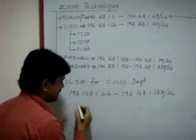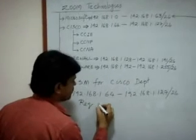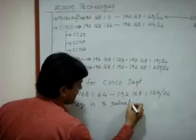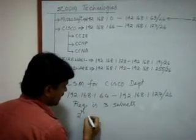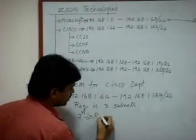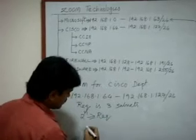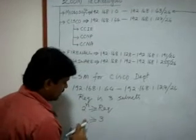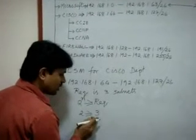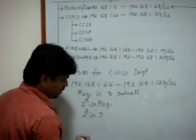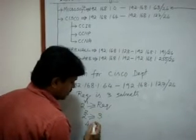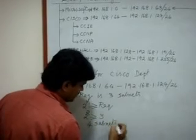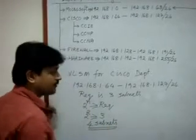The requirement is to divide this subnet into three subnets. We use the formula: 2^n ≥ requirement. The requirement is 3. If I take n=2, then 2^2 = 4, which is greater than 3 — satisfying the condition. So we get four subnets.